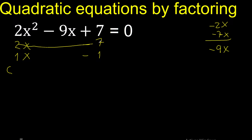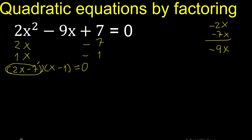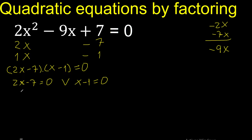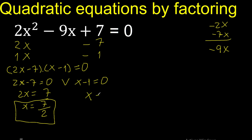Therefore: 1 multiplied by x is x, minus 1 equals 0. By the zero-product property, this equals 0 or this equals 0. Change the sign to plus. Change the sign — finished.